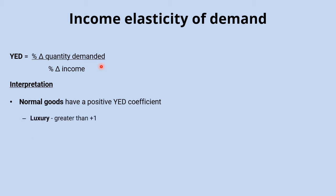We can further differentiate between luxury goods and necessities. For luxury goods, the coefficient is greater than positive one, because the impact on quantity demanded is more than proportional — the top figure is greater than the figure you're dividing by. Whereas if the percentage change in quantity demanded is less than the percentage change in income, that gives a value between zero and one, indicating necessity goods.